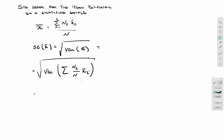Now we can use the fact that all these estimates are independent. So the variance of the sum is actually the sum of the variance. So this becomes the sum of the variance of NH over N, X bar H.